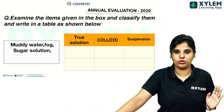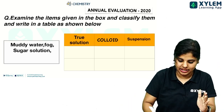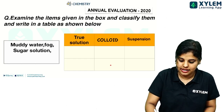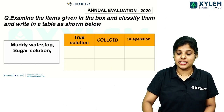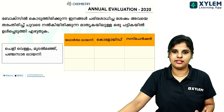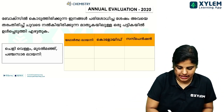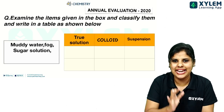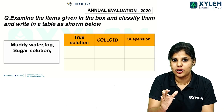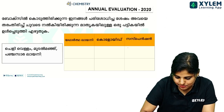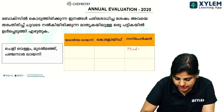These three things are to be classified. Muddy water — what is the category of muddy water? The answer is suspension. Muddy water is a suspension.